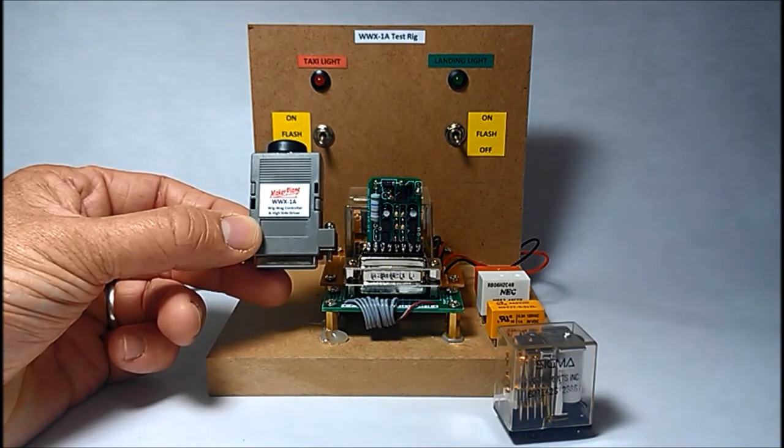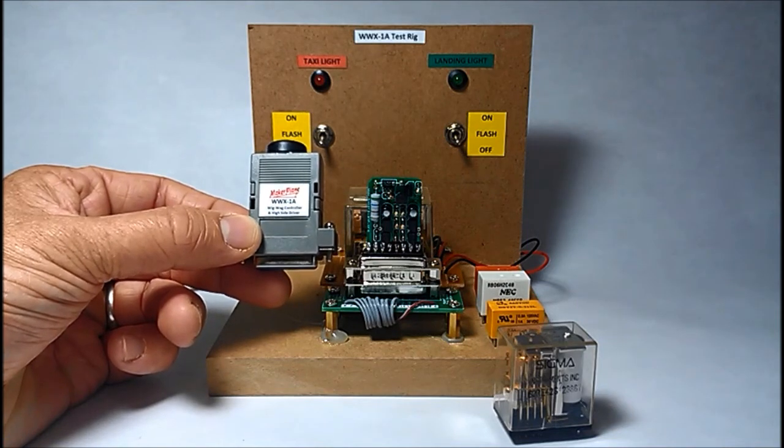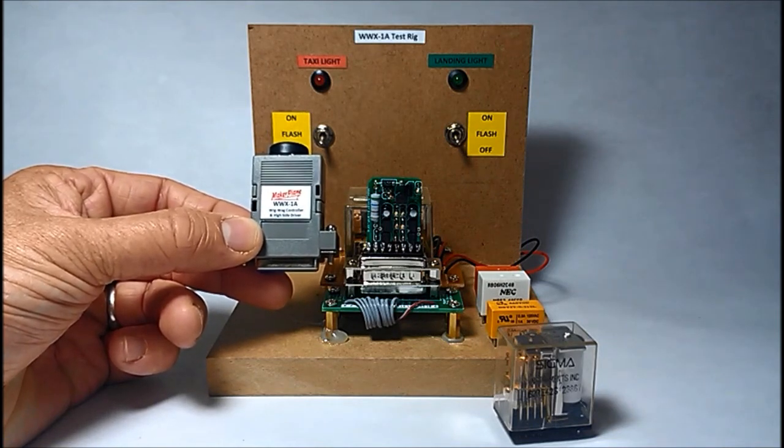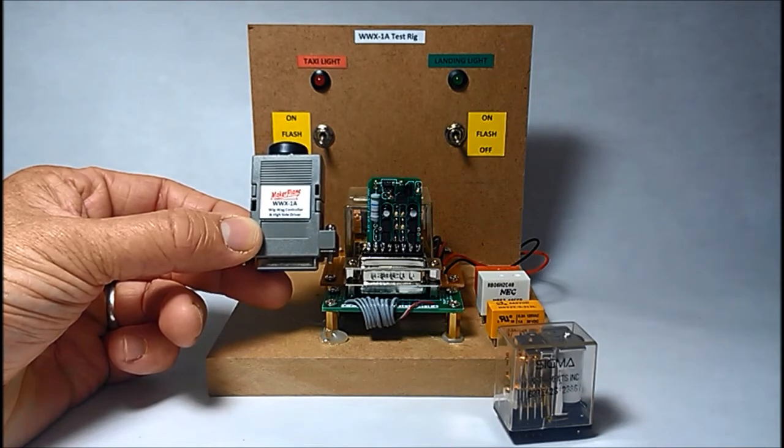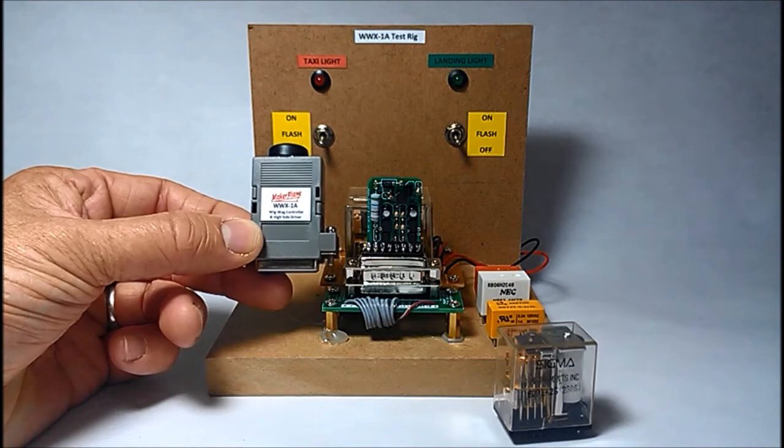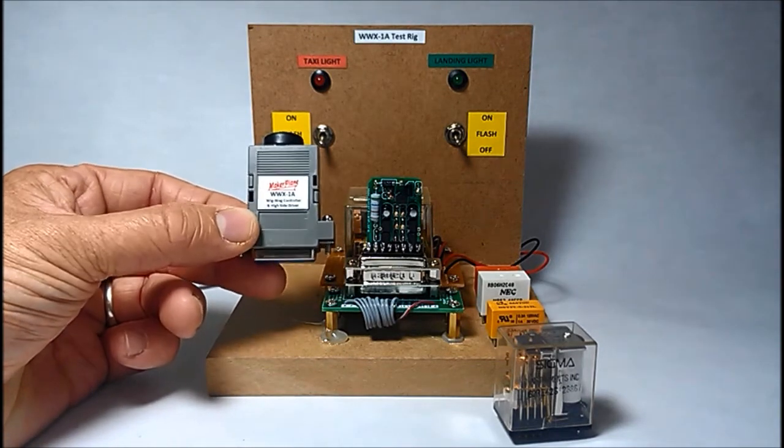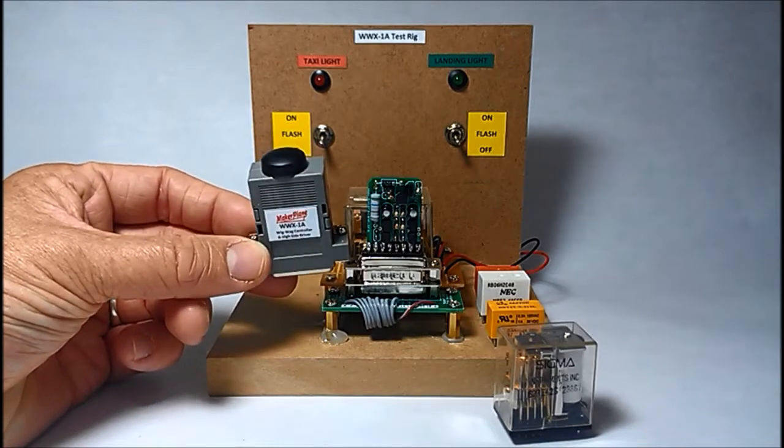So you can connect one side to a day night switch for example and in day mode the lights are full on. Switch it to night mode and then you can hook that through to a light dimmer and your lamps and you can allow your in cabin lighting to dim. So that's the high side driver side of the Wigwag controller.